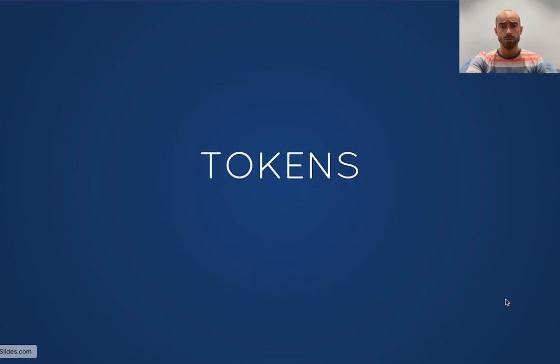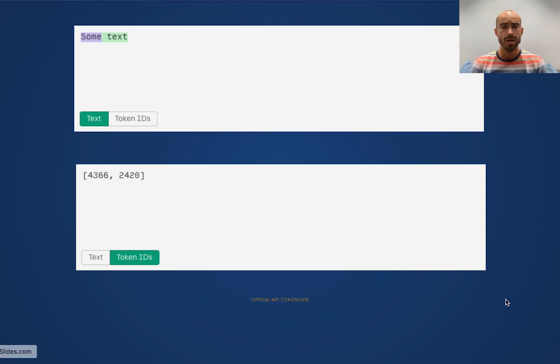So first, tokens. Tokens are how the model translates from a representation it understands, which are the numeric identifiers on the bottom, into a representation that we understand, so plain text. And you can see in this example, there's a clear alignment between words, which you could consider the primitive of our language, and tokens, which is primitive of the OpenAI model.